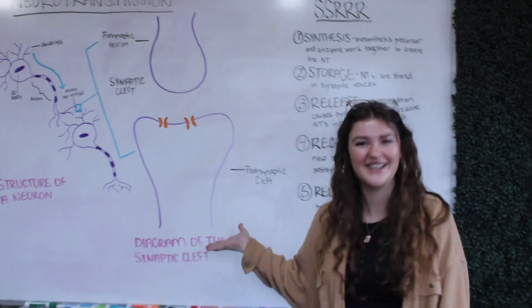Neurotransmission is how neurons communicate with each other in a consistent, reliable, and timely manner. Within the next three minutes you will learn the five basic steps of neurotransmission.